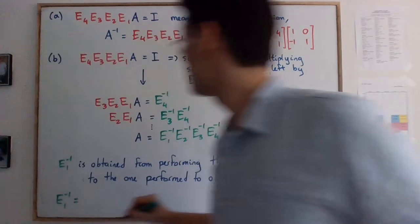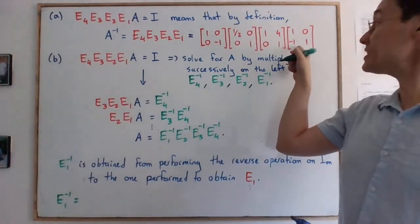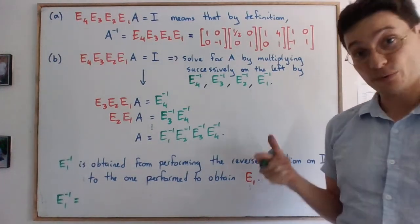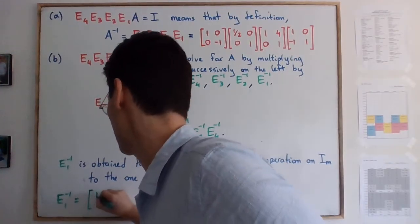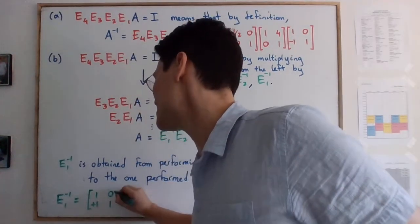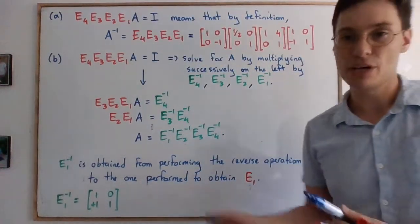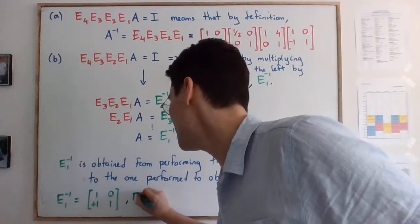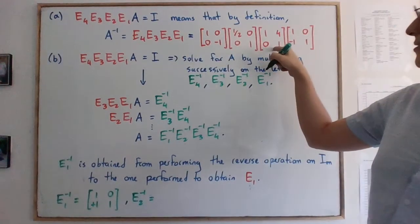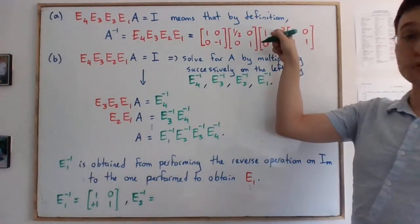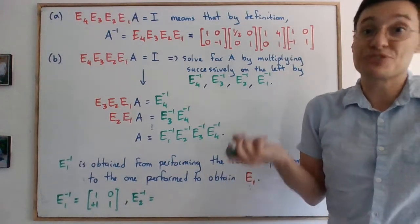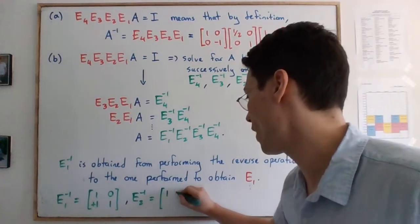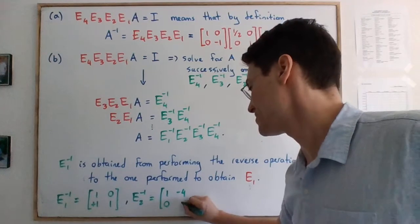So, reversing the operation is something that's actually quite easy to do. So, E1 inverse, actually, let's write them all here. So, we look at E1, which is this. What we did is we subtracted row 1 from row 2. So, the reverse operation will be to add row 1 to row 2. So, it's going to be 1, 0. And I'm going to put the plus here just as a sign placement, but you don't need to put it down. Then, E2 inverse, let's have a look at it. It's here. So, what we did is we added 4 times row 2 to row 1. So, the reverse operation is obviously to subtract 4 times row 2 to row 1. So, same deal. We have 1, and here we're going to get negative 4, 0, 1.